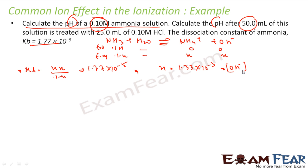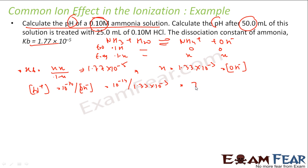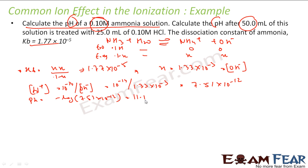Now I have to find pH, so I need the H+ concentration. H+ concentration equals Kw divided by OH− concentration, which is 10⁻¹⁴ divided by 1.33 × 10⁻³. This gives 7.51 × 10⁻¹². So pH equals minus log of 7.51 × 10⁻¹², which is 11.1. This is the initial pH — that's the first part.